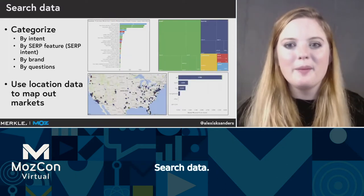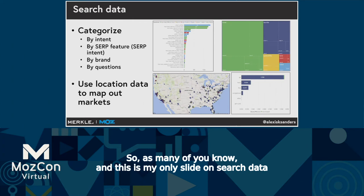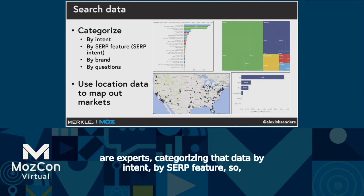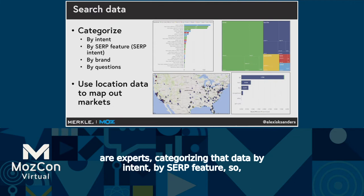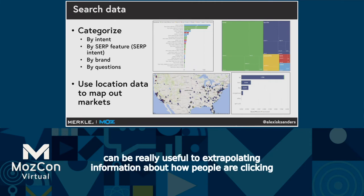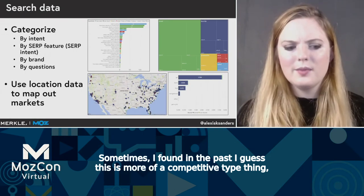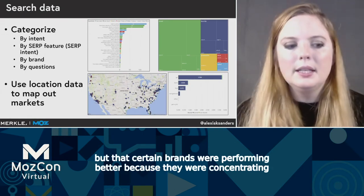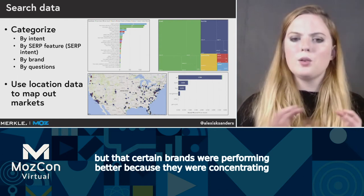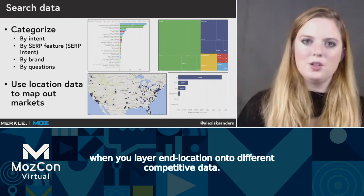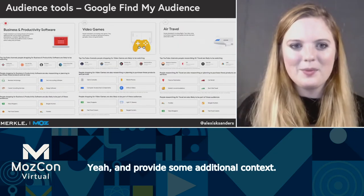Getting into the specifics — search data. Categorizing that data by intent, by SERP features, by search intent proxy, by brand, and by different questions can be really useful for extrapolating information about how people are clicking through to the site, as well as using location data where available. For instance, I've found in the past that certain brands were performing better because they were concentrating in specific markets more — which is interesting when you layer in location onto different competitive data.